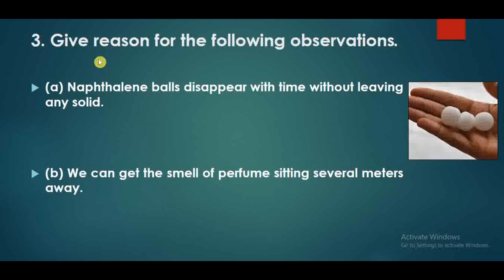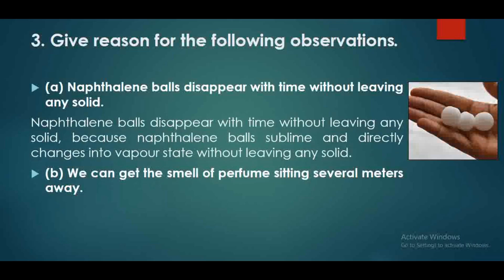Question number 3: give reasons for the following observations. Naphthalene balls disappear with time without leaving any solid residue. You will see that when we put these blankets back, we put naphthalene balls in woolen clothes. When we take them out next season, there are no balls. Because naphthalene balls sublime - they undergo sublimation. They directly change into vapor state without leaving any solid residue, going from solid to gaseous state without passing through the intermediate liquid stage. Sublimation is the main point here.